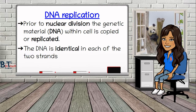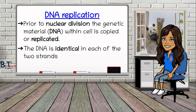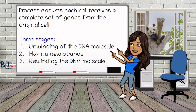Before any form of cell division takes place, the cell must double its DNA. It does this by a process called DNA replication. DNA replication occurs during interphase of the cell cycle at an astounding rate — as many as 4,000 nucleotides per second are replicated. This explains how bacterial cells with as many as 4 million nucleotides can complete a cell cycle in about 20 minutes. The process ensures that each resulting cell receives a complete set of genes from the original cell.